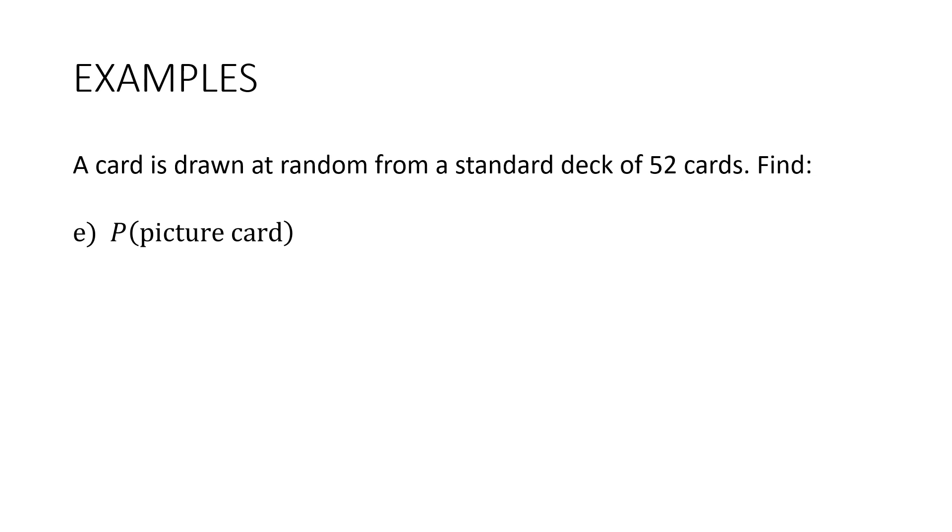Here's the next question. Find the probability that it's a picture card. So remember the picture cards are jack, queen and king. But they're in each of the 4 suits. So we want to do 4 suits times 3 cards which is 12 over 52.